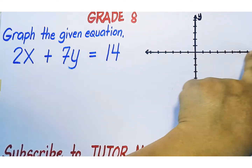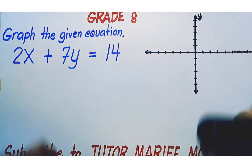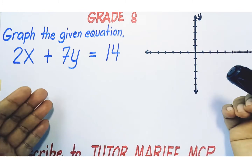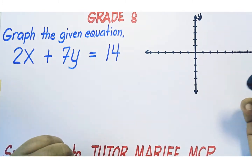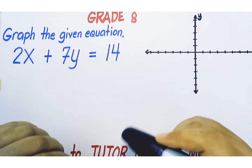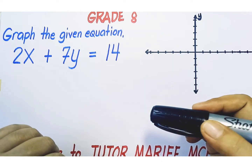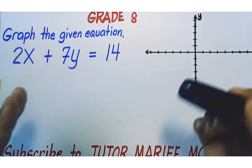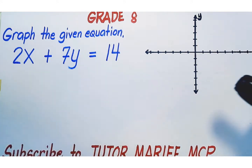That's why when we are solving for the x-intercept of a linear equation, we set y to zero and then solve the corresponding x-coordinate. So let's solve for the x-intercept of this given equation.